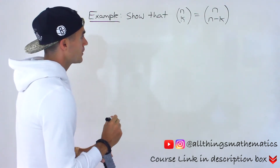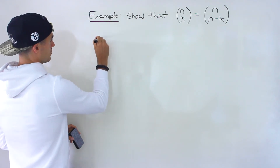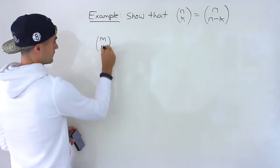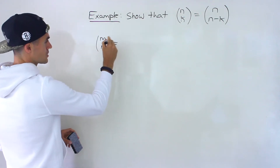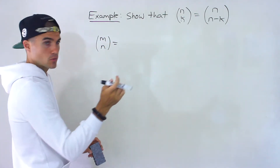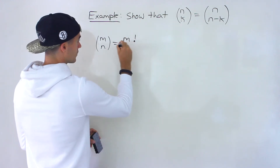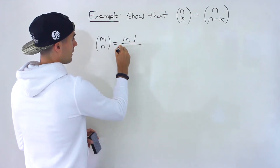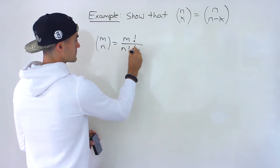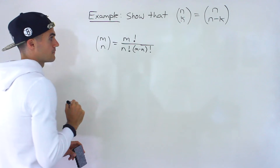The way we're going to prove it is using just the general equation for m choose n that we've been using in previous videos. So m choose n equals m factorial over n factorial times m minus n factorial.